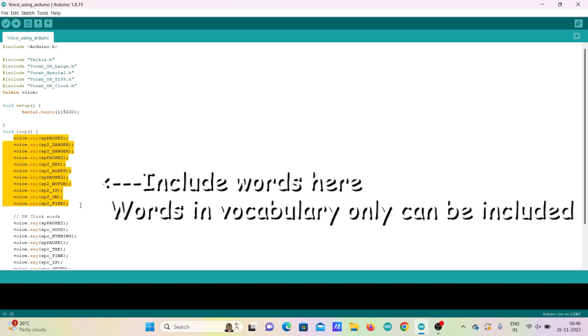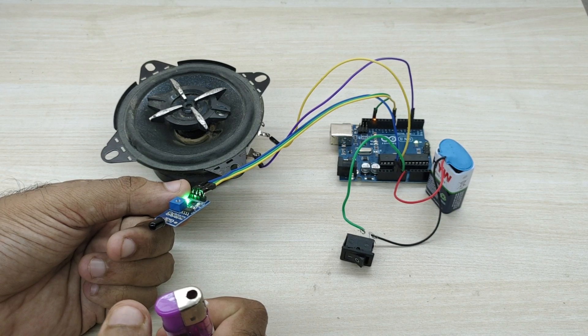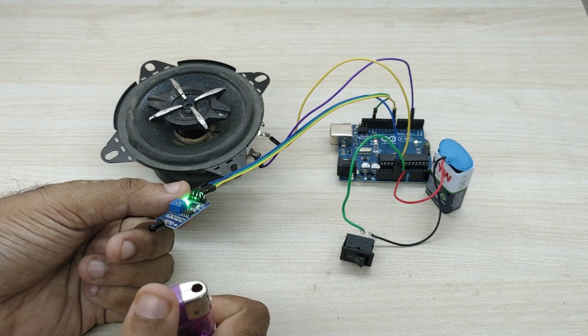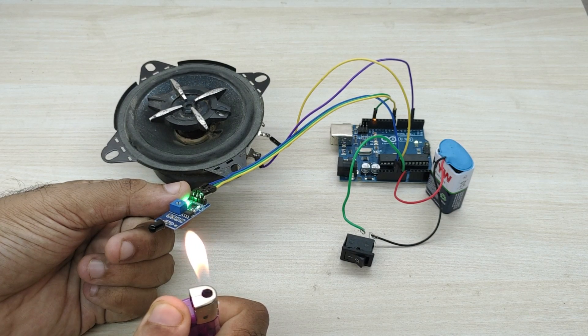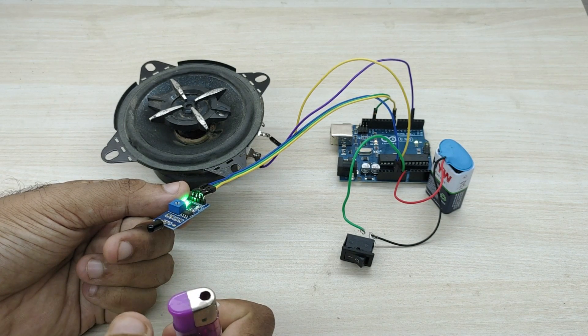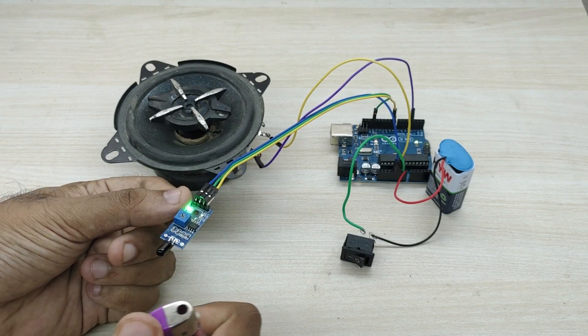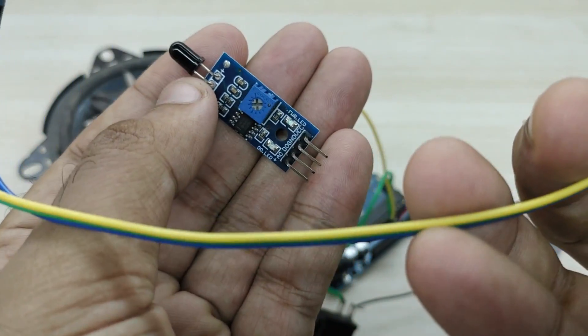Now, I will show a practical implementation of this speech generation using Arduino. We will make a fire detector which gives audio alert when fire is detected. For this, take a flame sensor.